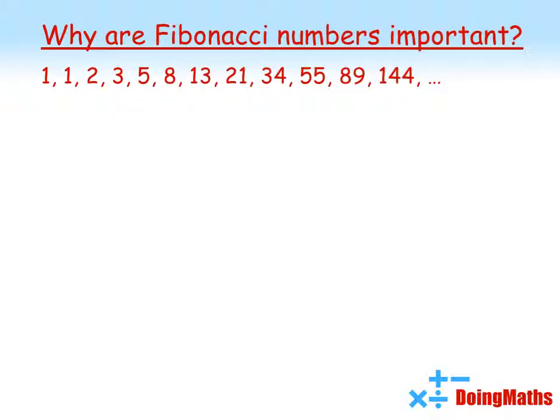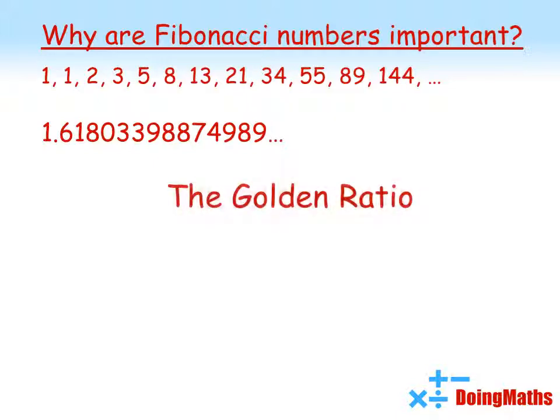If we were to keep going through the Fibonacci sequence dividing each term by the previous term, we would find that our answer tends towards this number here. We call this number the golden ratio. It is an irrational number — it goes on forever — but it's actually a very important mathematical number.